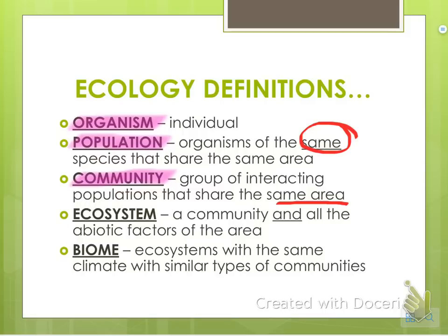The next thing is an ecosystem. This is a community plus — really important — abiotic factors. So it's all those different populations and the abiotic factors. Going back to the forest example, the ecosystem would also include the amount of sunlight in the forest, the temperature of the forest, and whether there's a stream running through the forest. Those are all abiotic factors of that ecosystem.